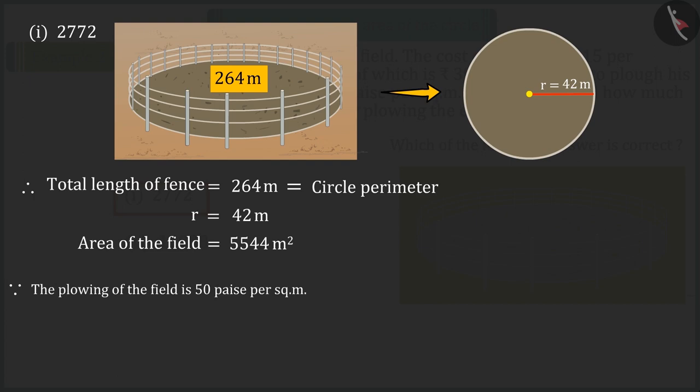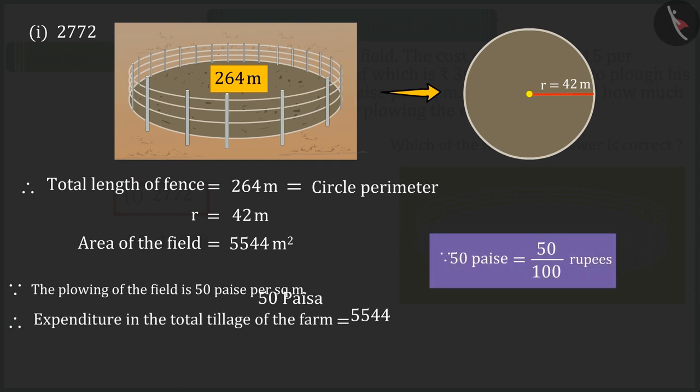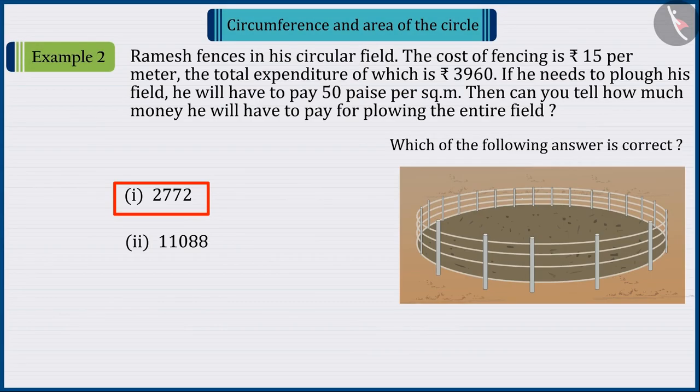Because we know that the plowing of the field is 50 paise per square meter. So, to plow the field, Ramesh will have to pay 2,772 rupees. Hence, option 1 is the correct answer.